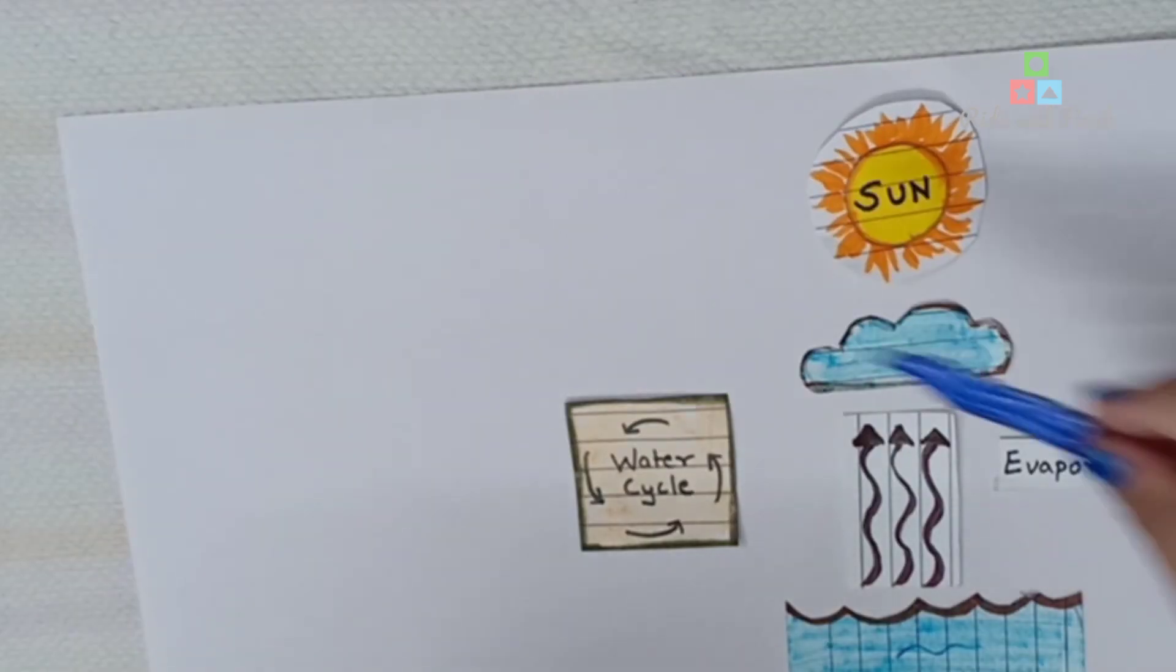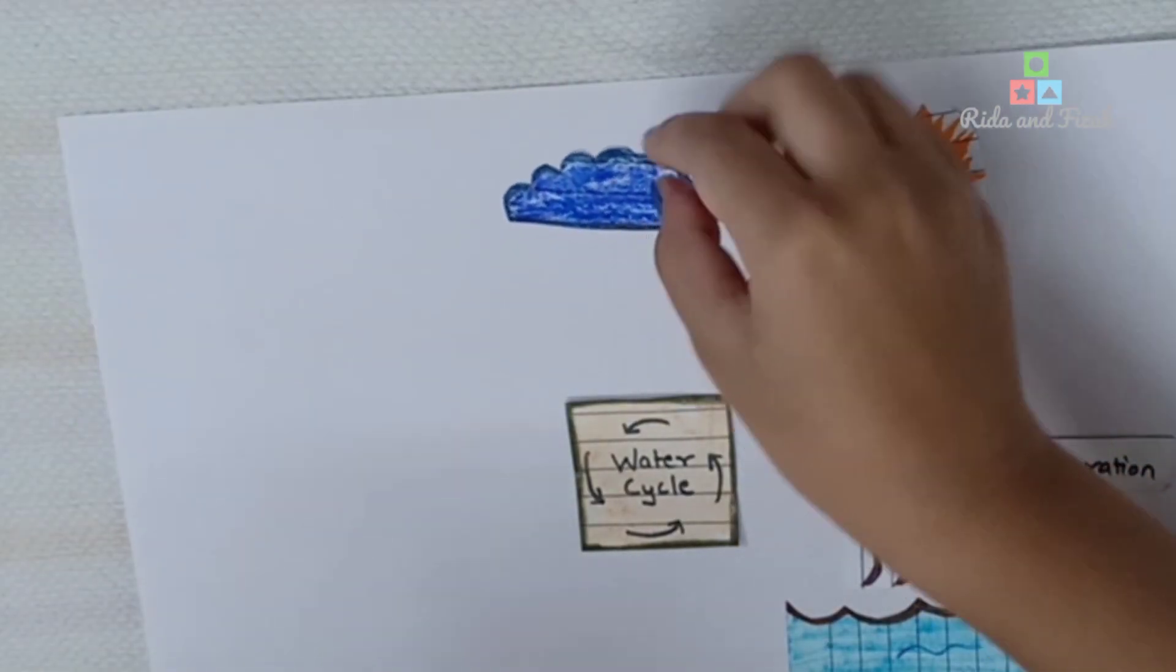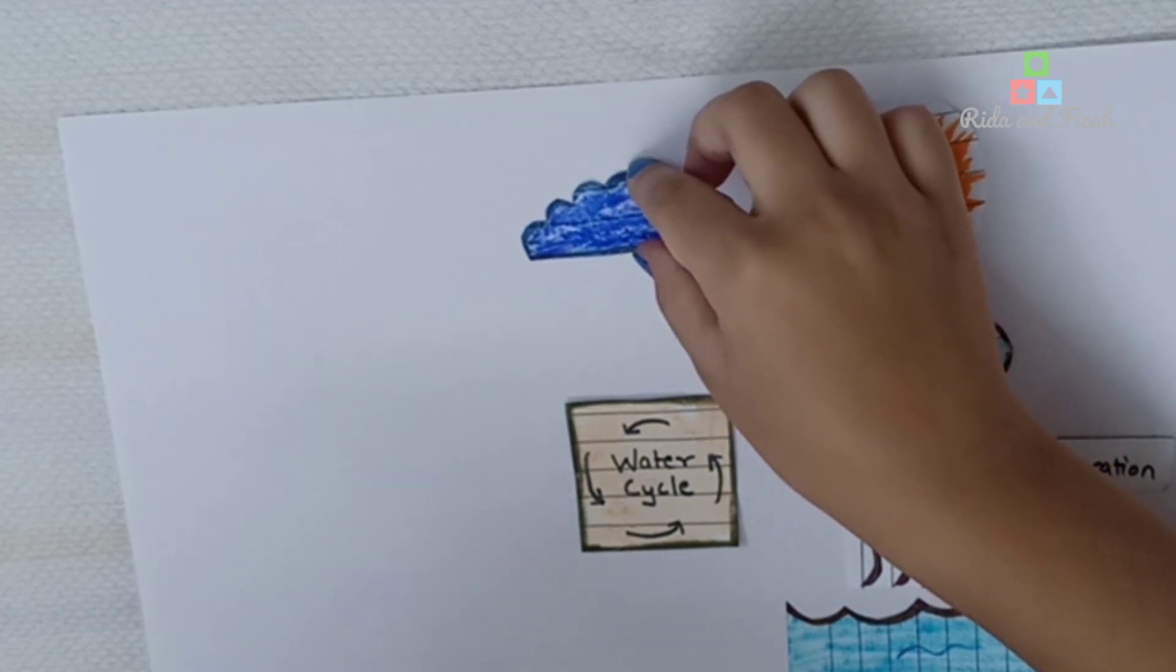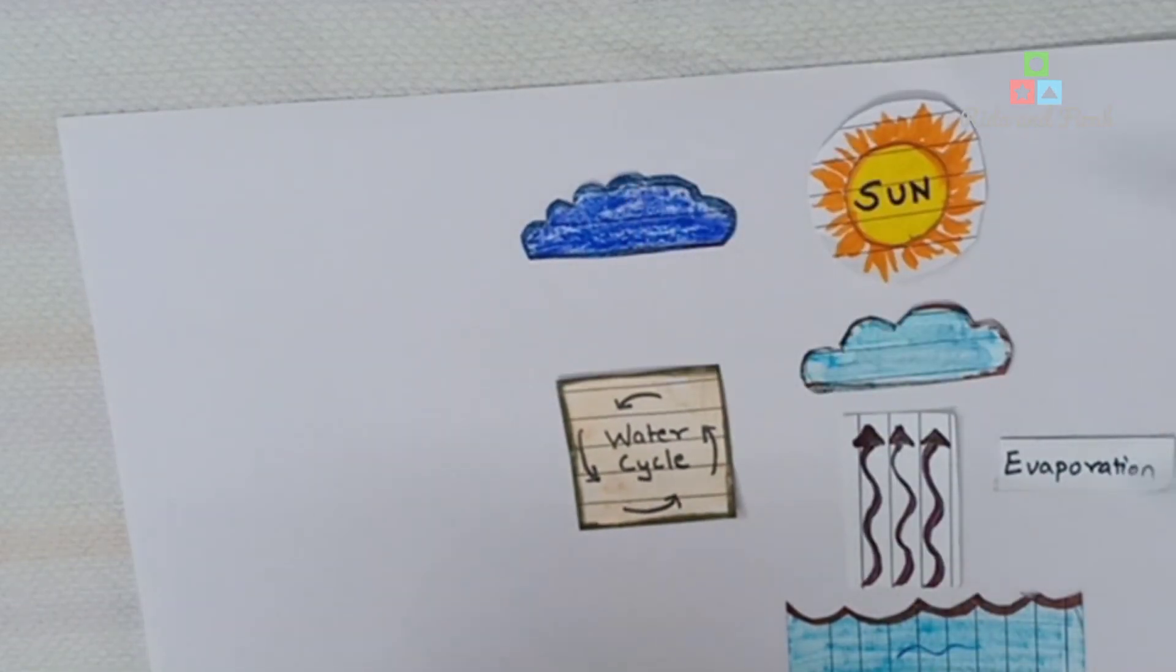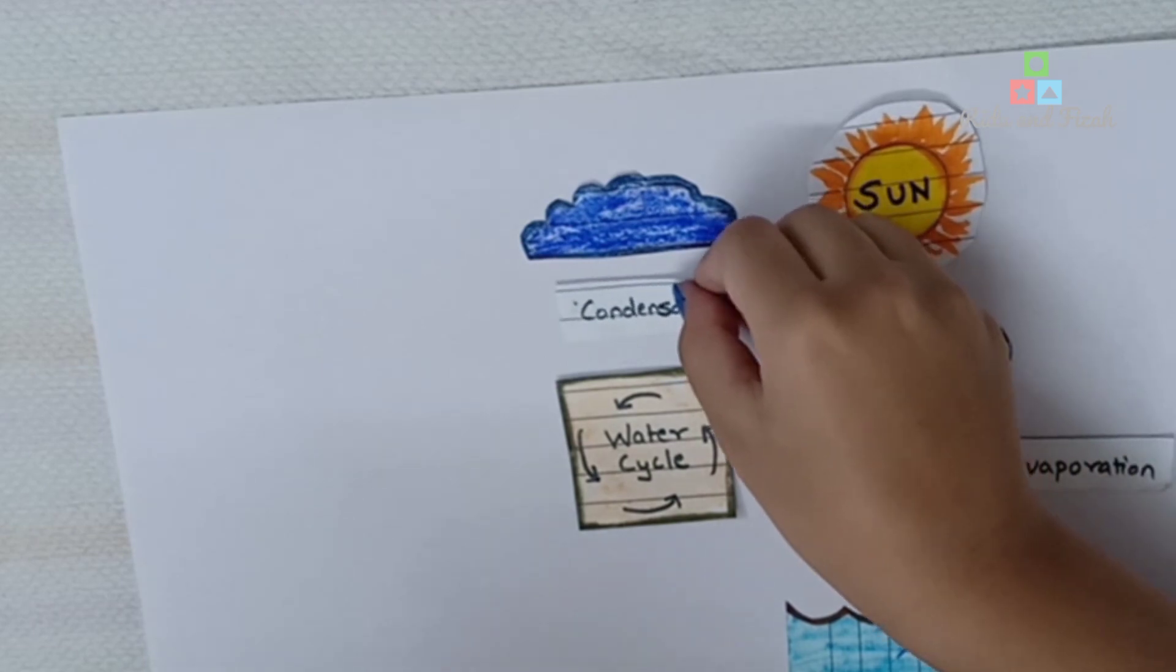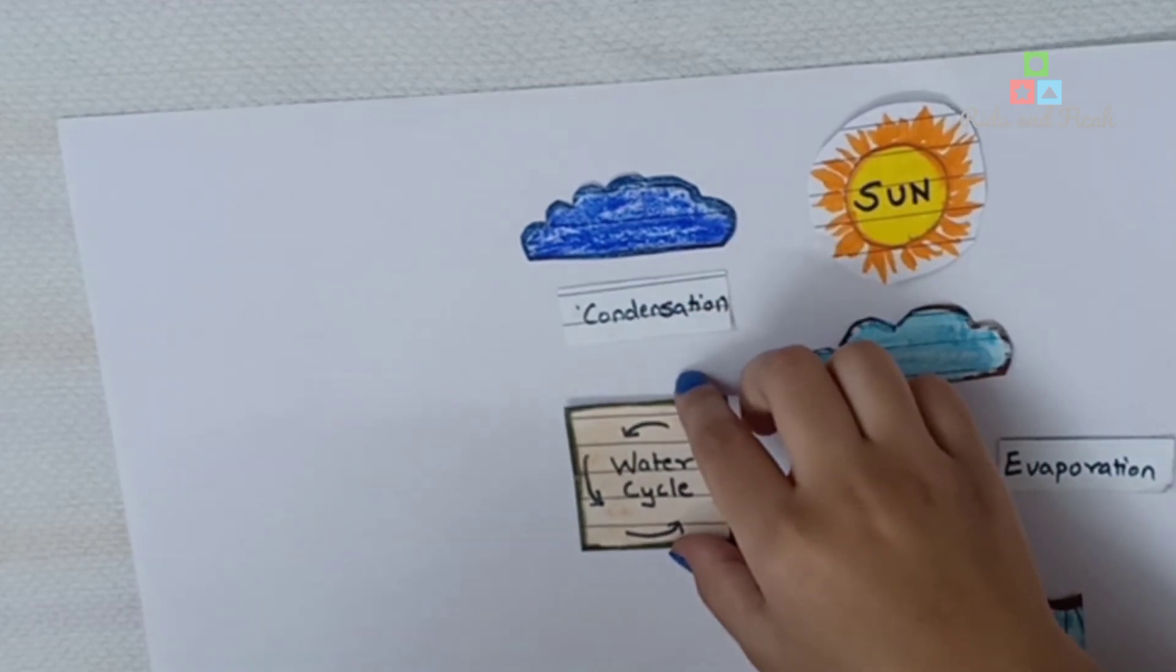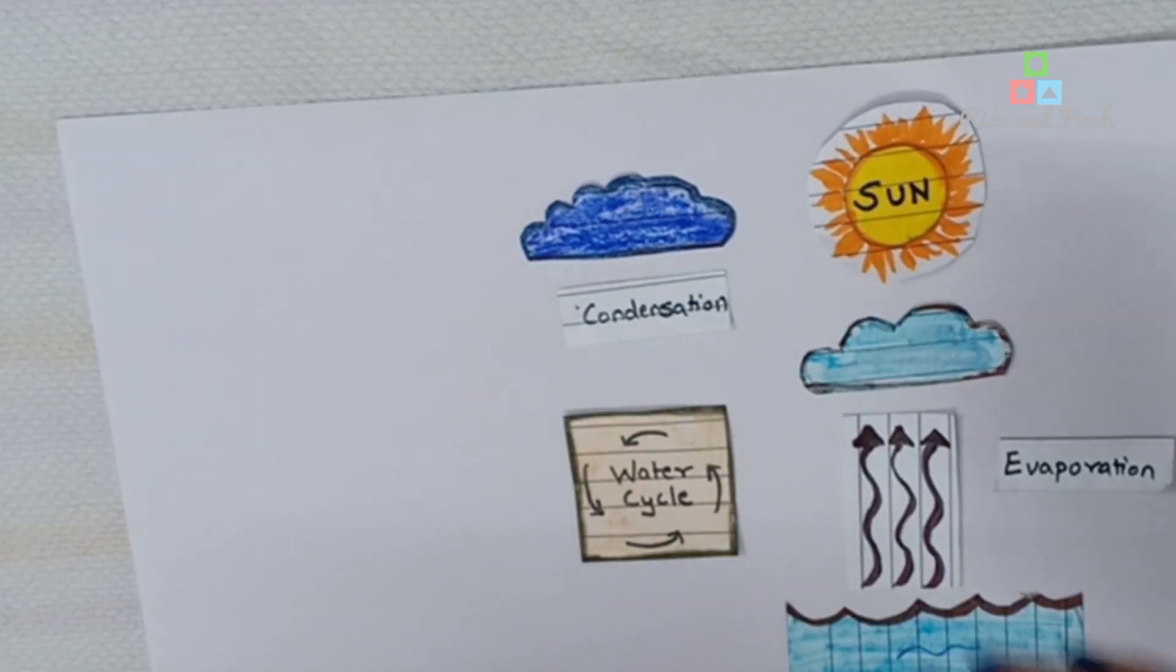As the water vapor rises higher into the air, it cools and condenses to form clouds. This process is called condensation.